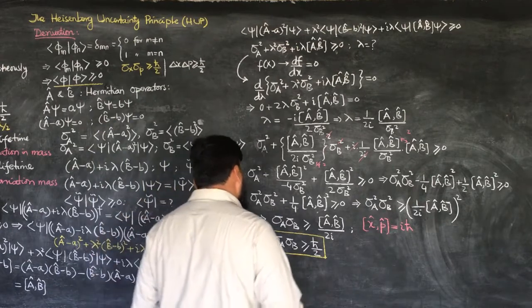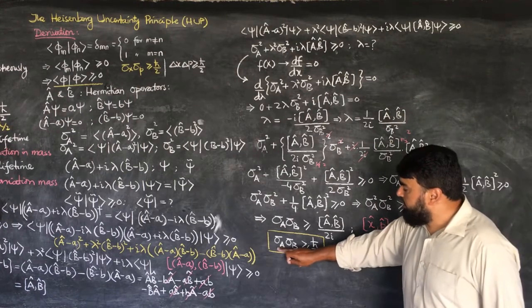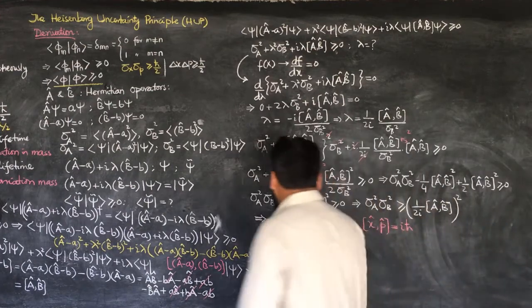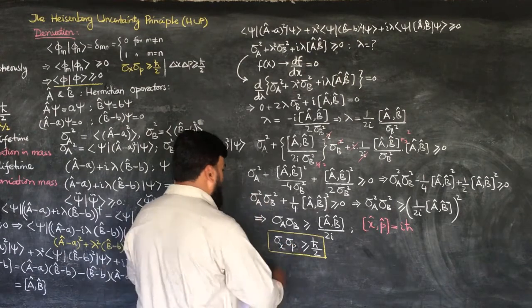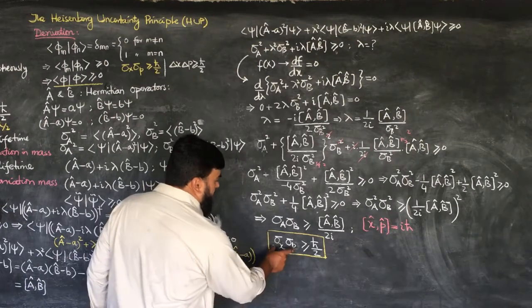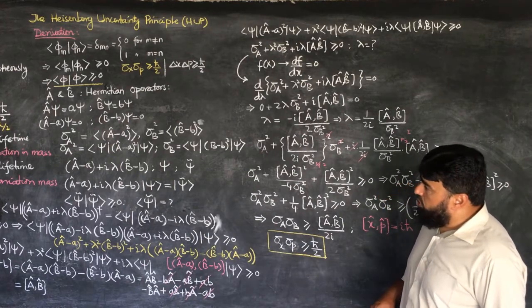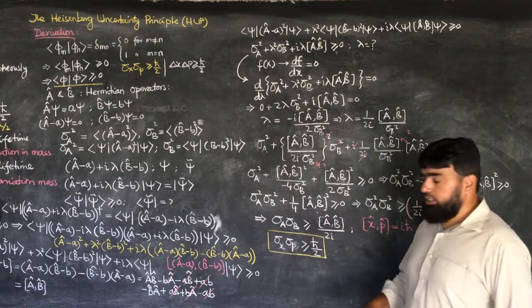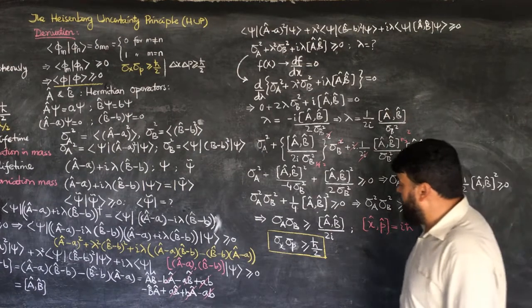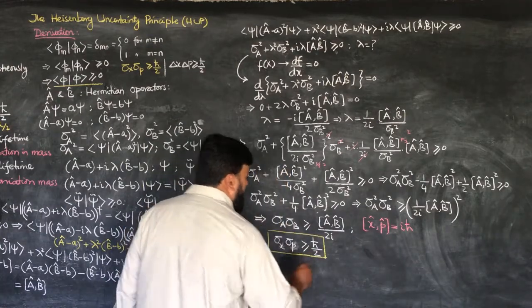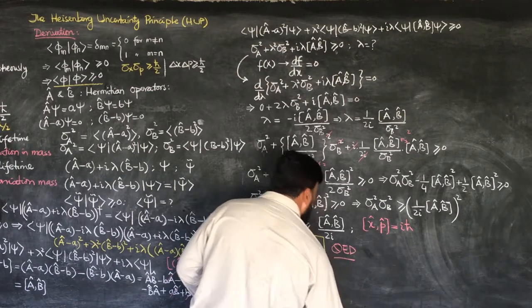With the help of Ehrenfest's theorem, one can prove the other uncertainty principles as well. For energy and time, one can prove the Heisenberg uncertainty principle by considering some additional calculations from here. Hence this completes the proof of the Heisenberg Uncertainty Principle.